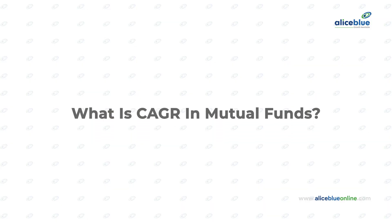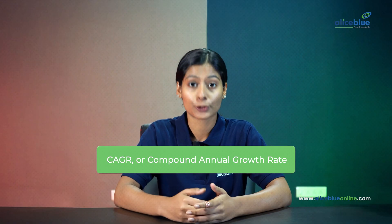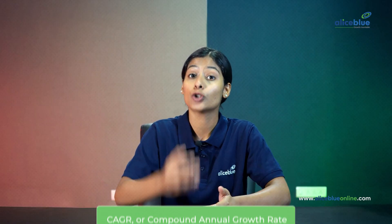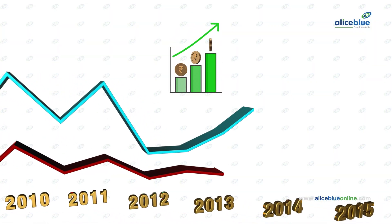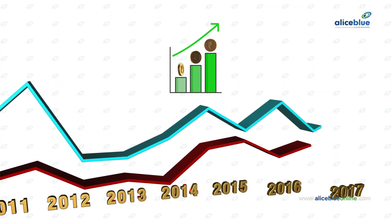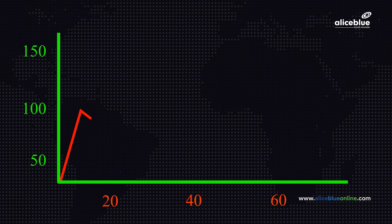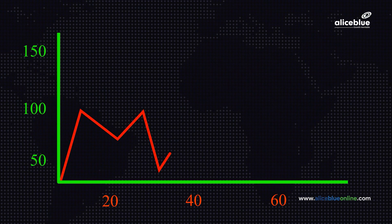So let's start with what is CAGR in mutual funds? CAGR, or compound annual growth rate, tells you how much your money grew each year on average over a certain number of years. It gives you a smooth yearly rate that would get you from the starting amount to the ending amount, even if the investment went up or down along the way.